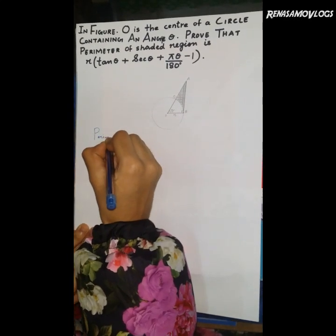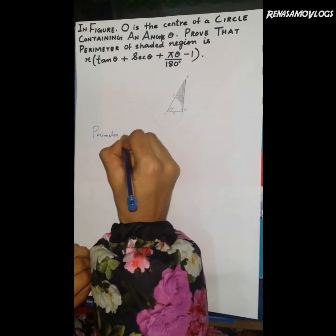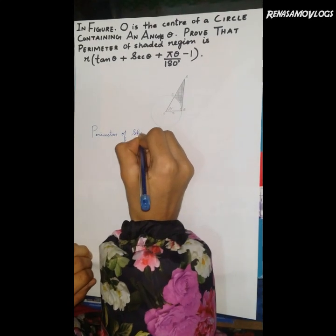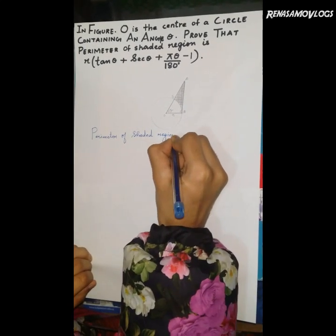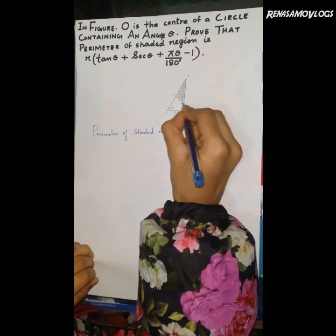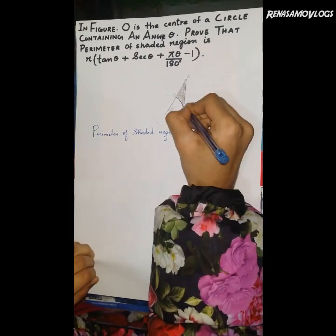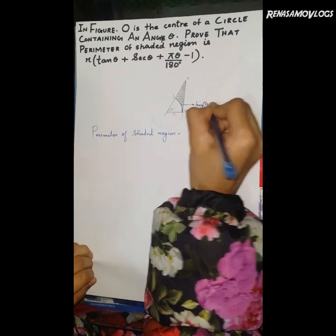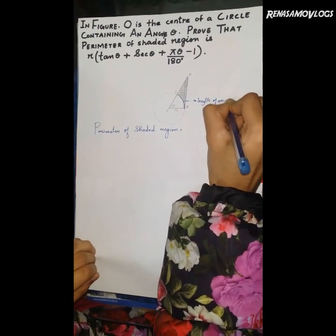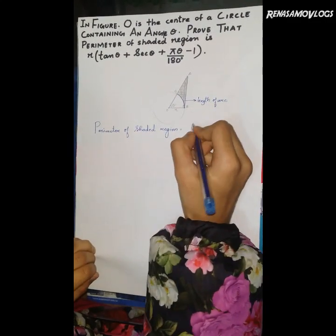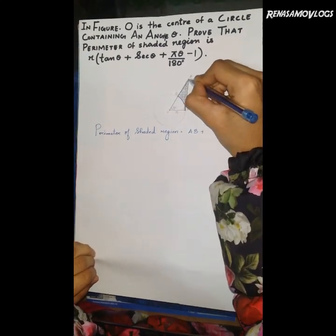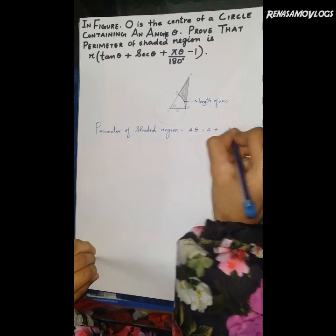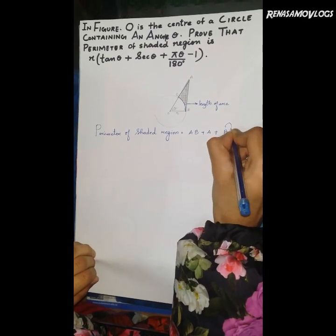Perimeter of the shaded region is AB plus AC plus length of the arc BC. This is the length of the arc BC.